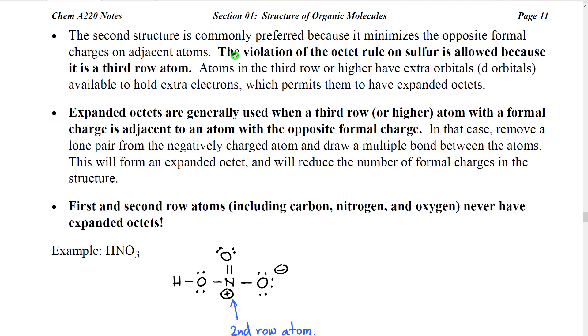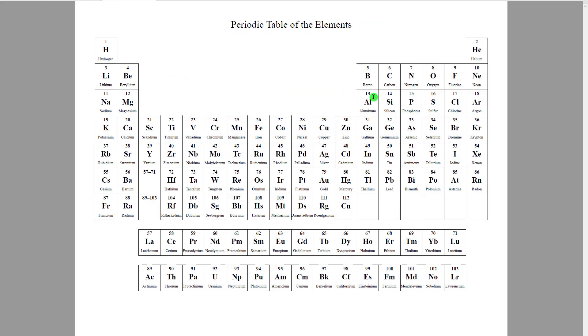So when do we get expanded octets? Well, we get expanded octets when the expanded octet is on a third row or higher atom. Now let me flip back to the periodic table. So what we can see here is that carbon, nitrogen, oxygen, these atoms are in the second row of the periodic table. And because of that, their d orbitals are super high energy. They have d orbitals. All atoms have all orbitals. But what happens is the orbitals are such high energy that they're not accessible to hold electrons.